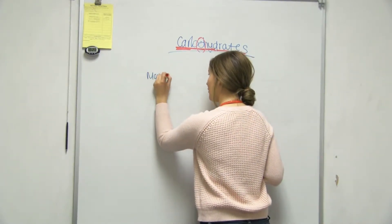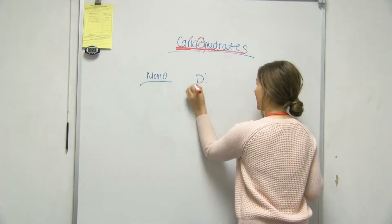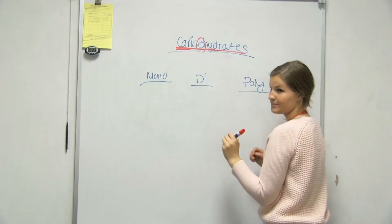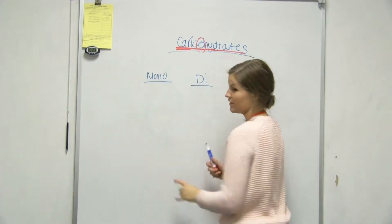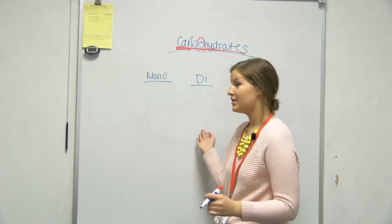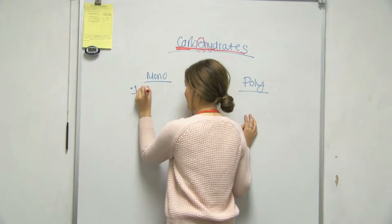And then we have monosaccharides, we have disaccharides, and we have polysaccharides. And so for the mono, that's going to, these are all going to be made of simple sugars. And so for mono, it's just going to be when we have one simple sugar.